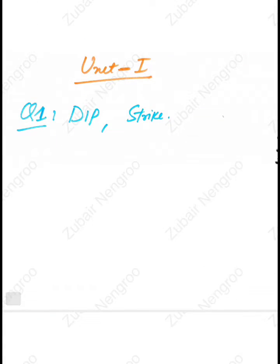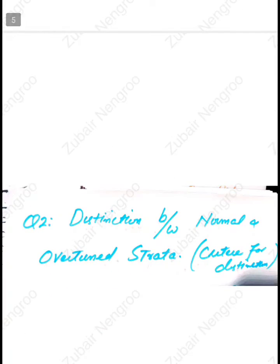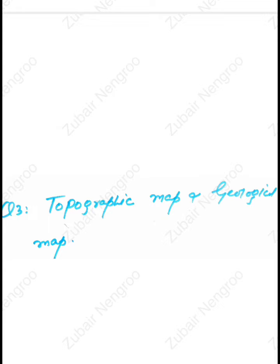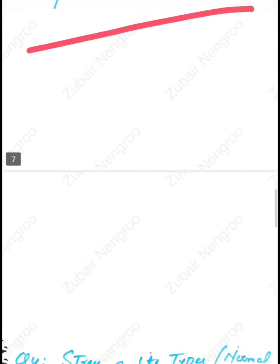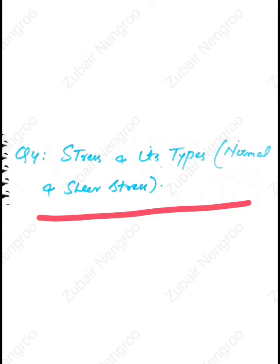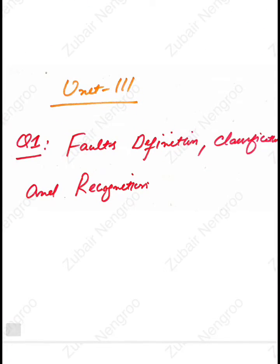Now we have Unit 1. The most important questions include: question number one, dip and strike; question number two, distinction between normal and overturned strata, or criteria for distinction between normal and overturned strata; question number three, define topographic map and geological map; and question number four, define cleavage and its types, that is normal and shear cleavage.